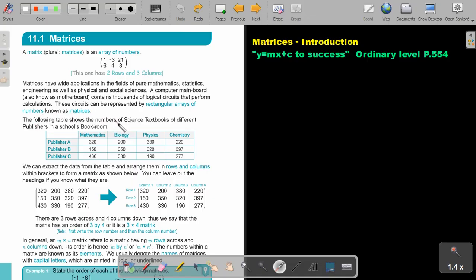The following table shows the number of science textbooks of different publishers in a school book room. Publisher A, publisher B, and publisher C. And it's mathematics, biology, physics, and chemistry there.